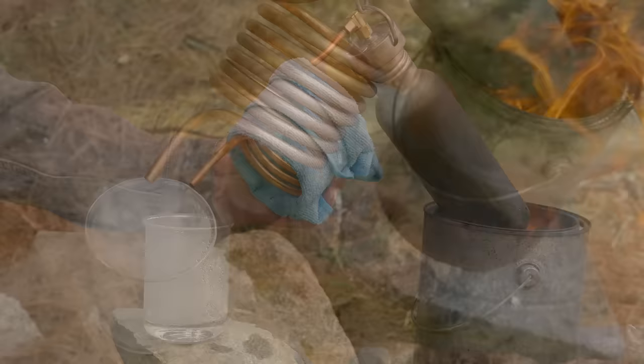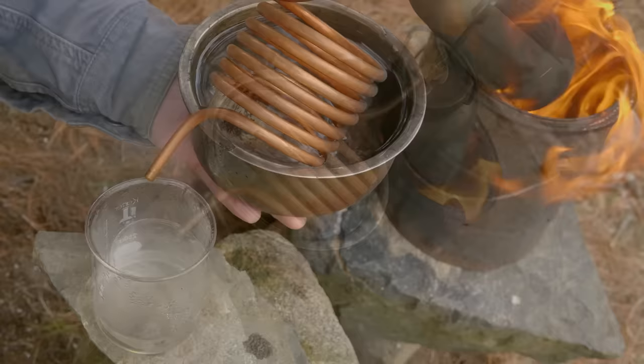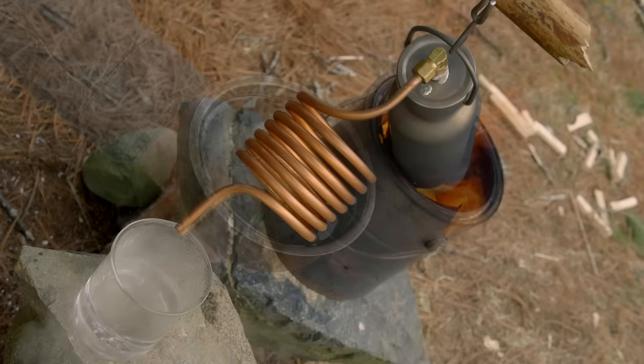An even more efficient method if you have an extra container is to dip the whole bottom half of the coil into water. This works so well that all of the steam will stop flowing, and it will seem like water production has stopped. But in a few moments water will have filled the coil and resume pouring out of the end. With this setup you will end up with almost all of the water you started with, free of salt.